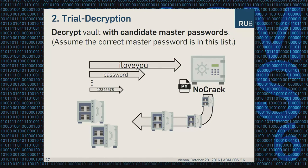In the second step, we trial-decrypt the vault using plausible master passwords — passwords that are very likely the real one. We assume that in our list of tested master passwords, the correct one is included. This is a valid assumption because if we use a normal password vault, we need to crack it anyway.